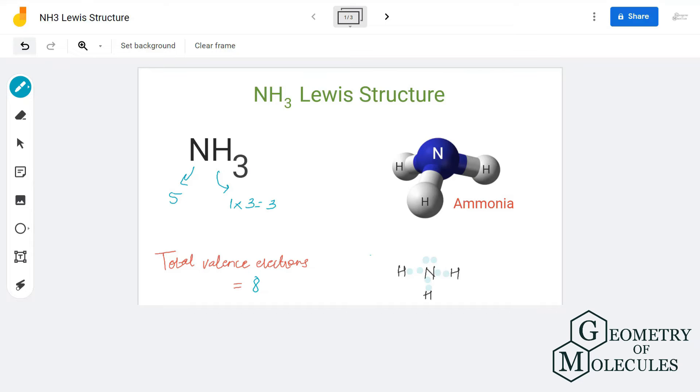So now for the Lewis structure, we will place the nitrogen atom in the center and all the other hydrogen atoms will be arranged around the nitrogen atom like this. Once you have done this, start placing all the valence electrons of individual atoms.